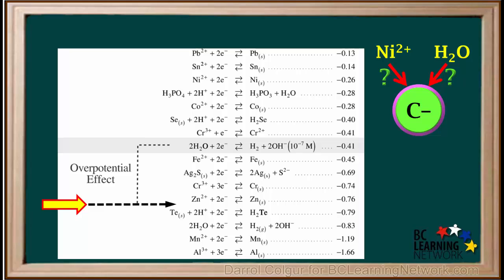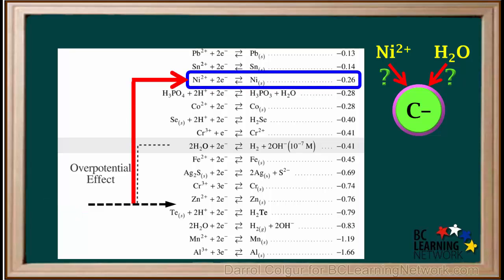So for the cathode, we use the overpotential arrow on the left, right here. We see that the half reaction for the reduction of Ni2+ is higher than this arrow. So the Ni2+ will be reduced at the cathode rather than water. And we'll replace the question mark here with a check mark.